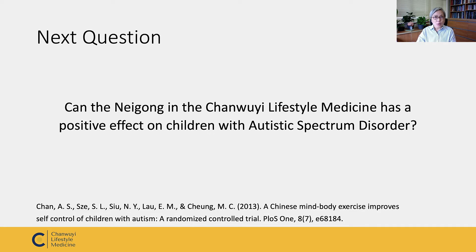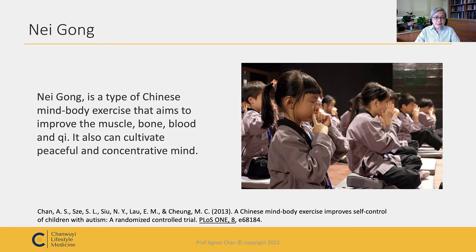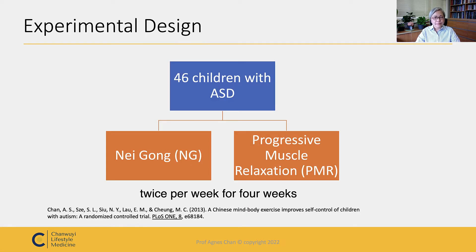The next question we wanted to ask is whether neigong, used in Chan Wuyi lifestyle medicine, has a positive effect on children with ASD. The purpose of this study was to compare neigong with conventional progressive muscle relaxation to see if either technique can enhance self-control. Neigong is a type of Chinese mind-body exercise that aims to improve muscles, bones, blood, and qi, and to cultivate a peaceful and concentrated mind. We have 46 children with ASD randomly assigned to learn neigong or progressive muscle relaxation for four weeks, three times per week.